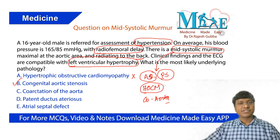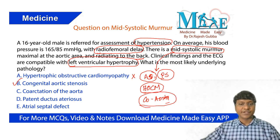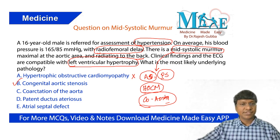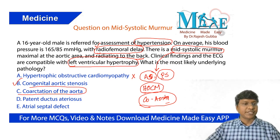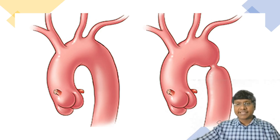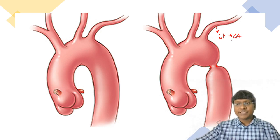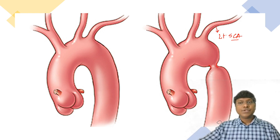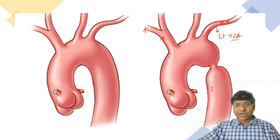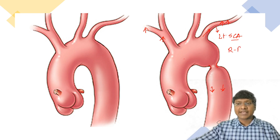The clinical condition where you have an ejection systolic murmur radiating to the back is coarctation of aorta. One important point in favor of coarctation is the presence of radiofemoral delay. Coarctation of aorta is a narrowing of the aorta distal to the left subclavian artery. Because of this narrowing, blood supply to the upper limbs is maintained via the right and left subclavian arteries, but blood supply to the lower limbs is reduced — and that is why the individual has radiofemoral delay.